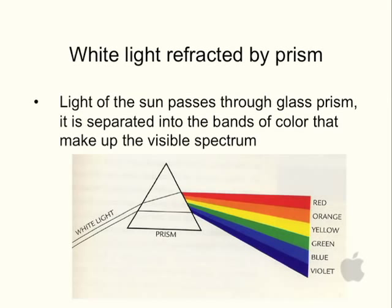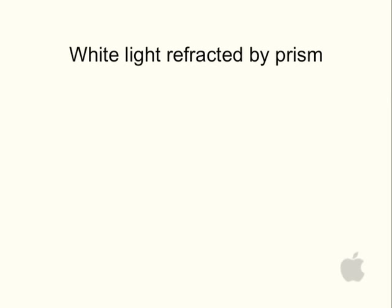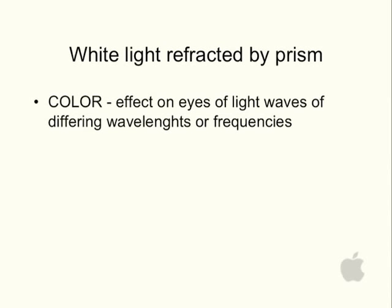So what is white light? White light is refracted by a prism. The light of the sun passes through the glass prism and is separated into the bands of color that make up the visible spectrum. So you've got these colors: red, orange, yellow, green, blue, and violet. Those colors pass through the prism and create white light.